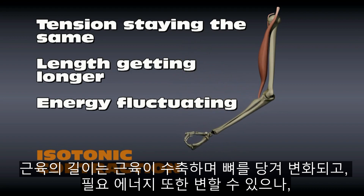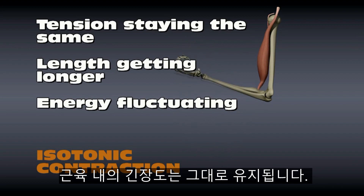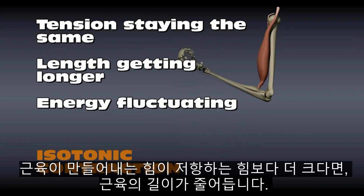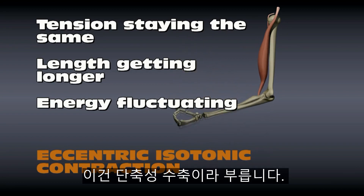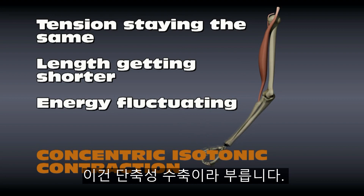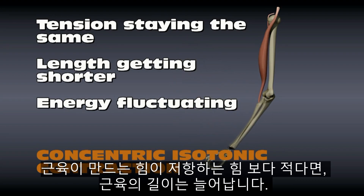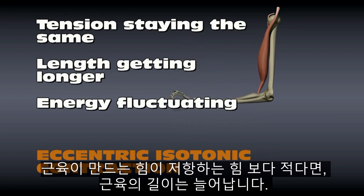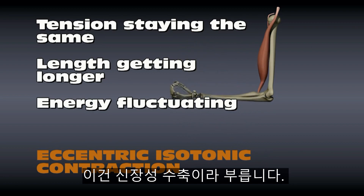The amount of energy required by the muscle may change, but the tension across the muscle stays the same. If the force the muscle is producing is greater than the opposing force, the muscle shortens — this is called a concentric contraction. If the force the muscle is producing is less than the opposing force, the muscle lengthens — this is called an eccentric contraction.